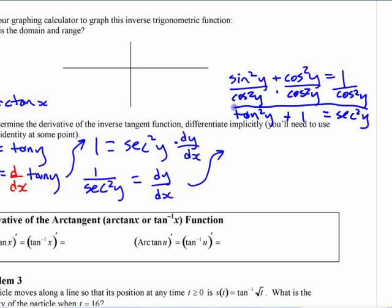If you haven't done trig in principles of math 12, you're probably wondering where all these things come from, but there's an identity that says those are always equal. Secant squared is one plus tan squared.